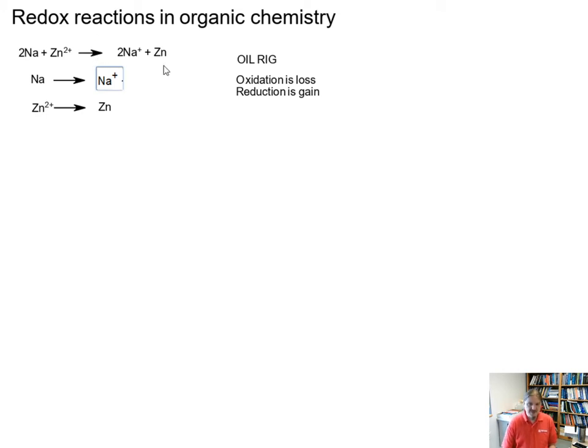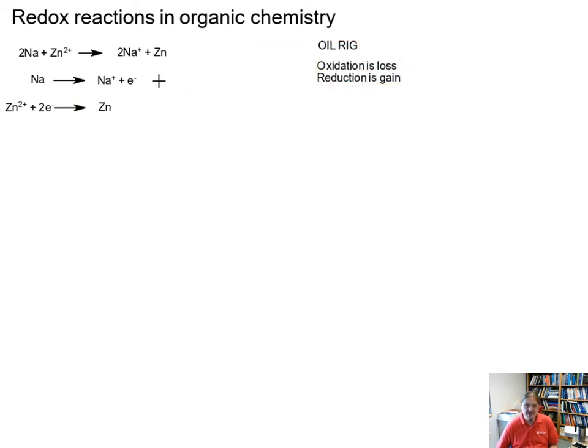And so here is the case, sodium is being converted into the sodium cation. In order for that to happen, sodium atoms need to lose an electron because the cation has one fewer electron. I also have this second half reaction where zinc cations are being converted into zinc metal. And in this case, zinc cations need to pick up electrons to go back to being zinc metal. And so we can say that in this reaction, sodium is oxidized and zinc cations are reduced.